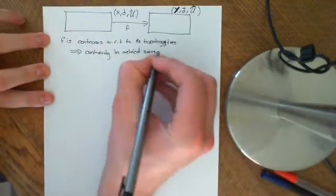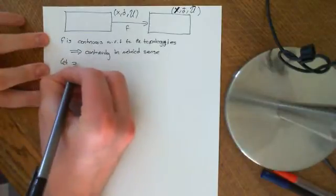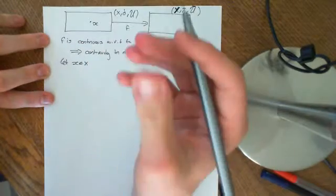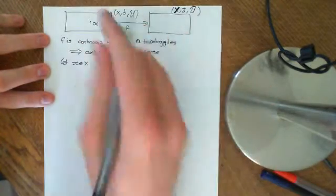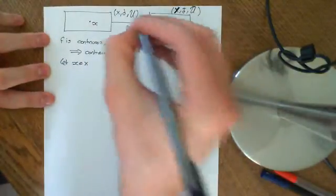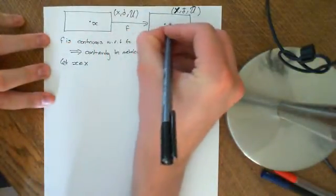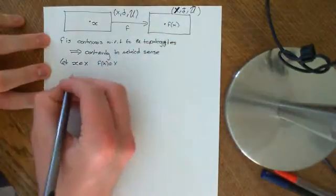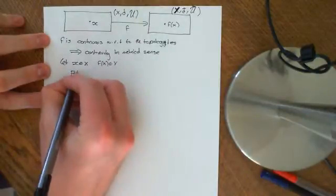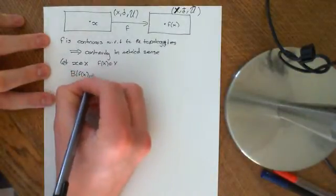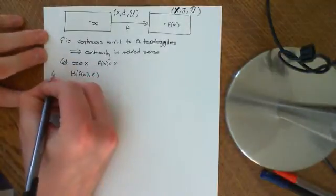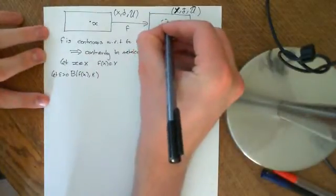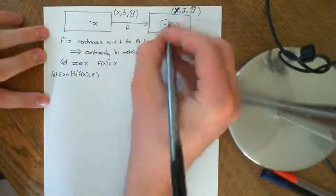Let little x be an element of big X. What we're going to show is that f is continuous in the metrical sense at every single point in X. So let x be an arbitrary point in X; then it has a corresponding point f(x) in Y. Let epsilon be greater than zero, and take the open ball of size epsilon around f(x).